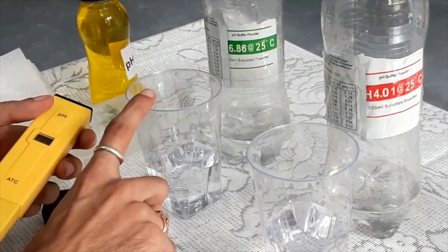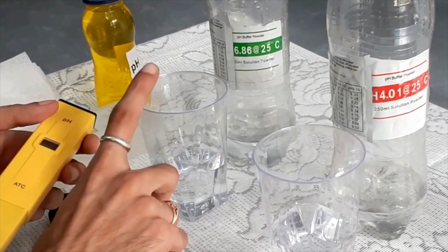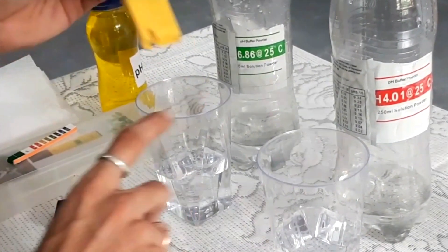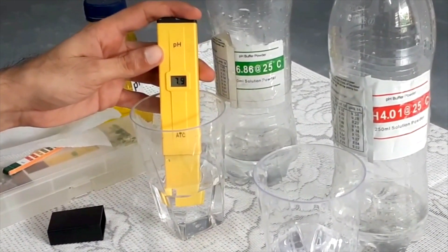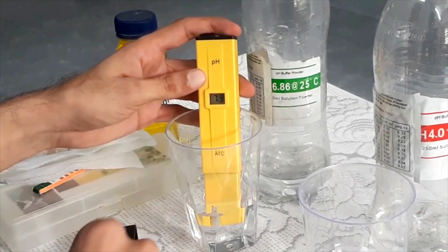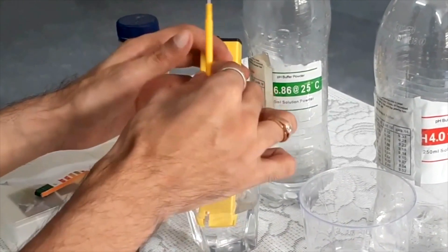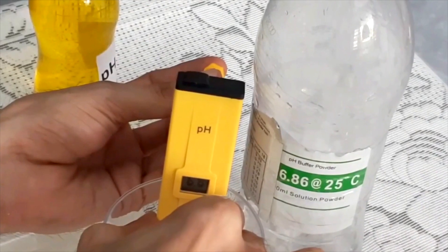Lastly we'll calibrate the meter with a 6.86 buffer solution. Rotate the screwdriver till you get a reading of 6.86.